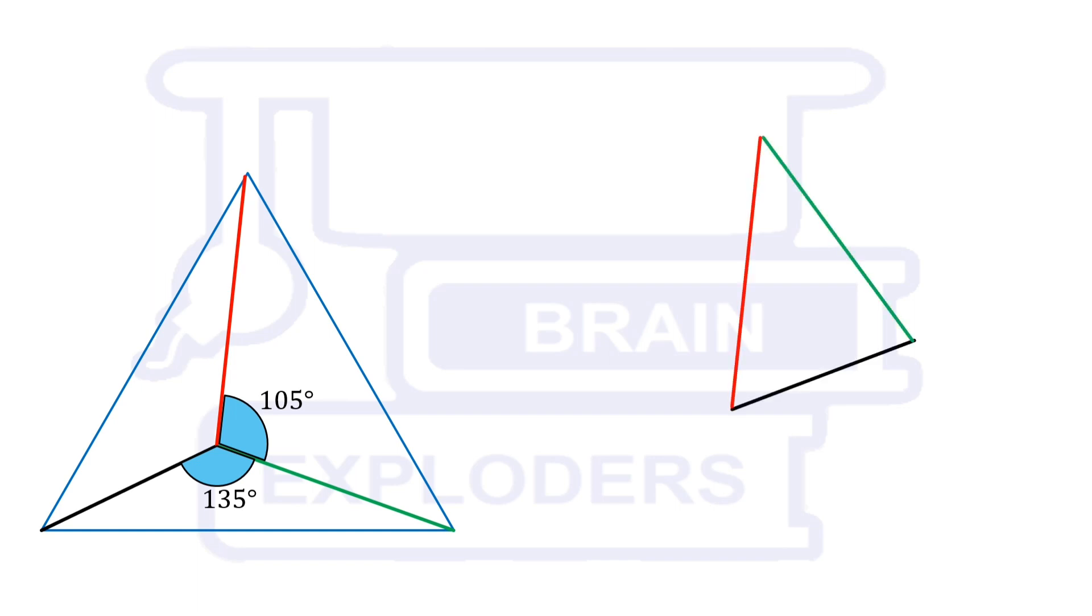If three vertices of an equilateral triangle are joined to any point in the interior of the triangle, then the problem asks the measure of interior angles of that triangle which is formed by the line segments joining vertices of the equilateral triangle to the interior point.